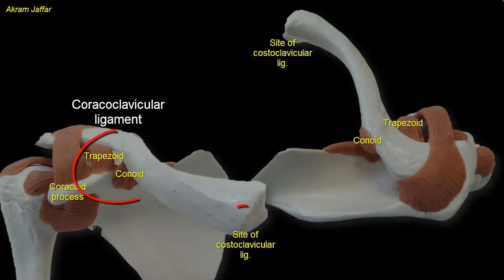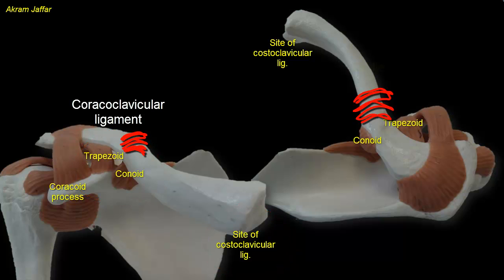Each of these ligaments at the two ends is stronger than the clavicle itself. Thus, the common site of fracture is at the junction of the middle and lateral thirds of the clavicle, the weakest point.